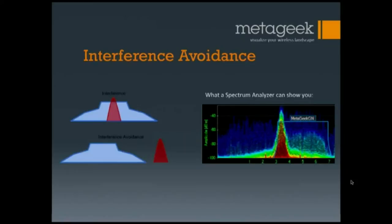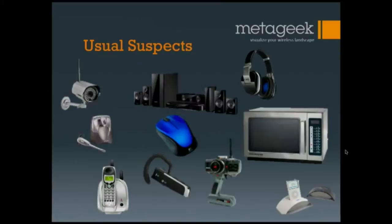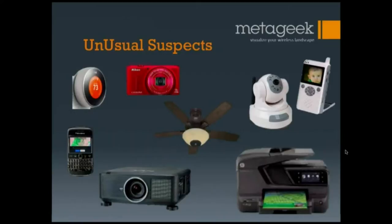The usual suspects of non-Wi-Fi interference in the 2.4 GHz band. With increasing amounts of smart technology — the Internet of Things — in the average home and office, you have many more potential sources of interference: home thermostat, digital camera, Wi-Fi smart printer, automated home products like fans, baby monitors. It really highlights the need for being able to look into the spectrum, not only to see Wi-Fi interference but to see non-Wi-Fi.